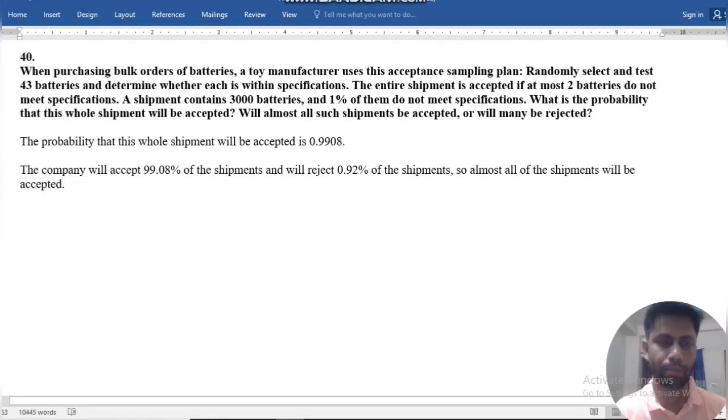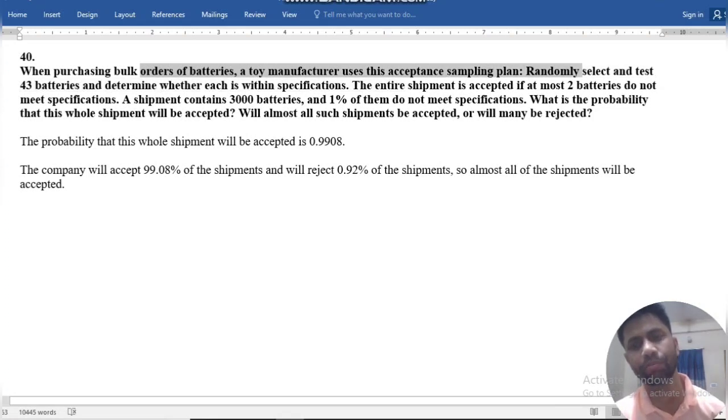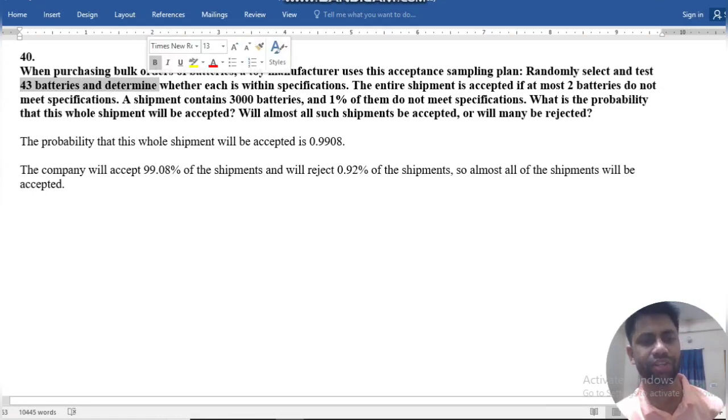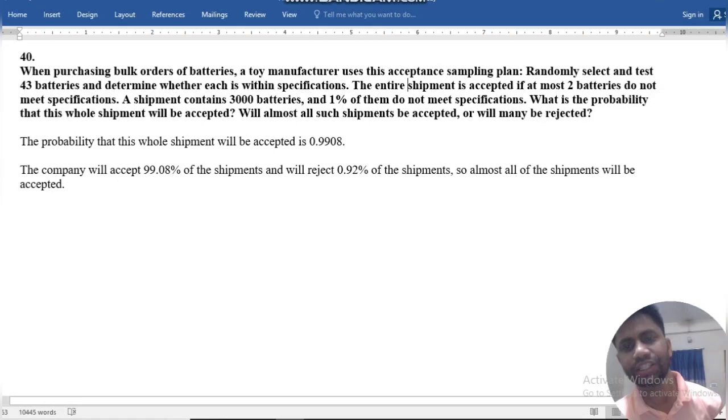When purchasing a bulk order of batteries, a toy manufacturer uses an acceptance sampling plan. They randomly select and test 3 batteries and determine if they are within specification. The shipment will be accepted if at most two batteries do not meet specification.